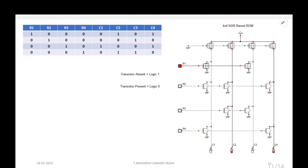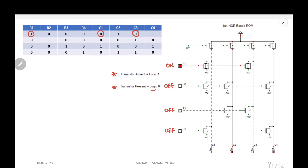For the 4x4 array, R1, R2, R3, R4 are the 4 rows, and C1, C2, C3, C4 are the 4 columns. Two key points: if a transistor is absent, it is logic 1; if a transistor is present, it is logic 0. For the first condition, R1 is 1 and the remaining three are 0. So R1 is ON, others are OFF. Since C1 and C3 are 0 in the truth table, logic 0 means a transistor should be present — so transistors are placed at the C1 and C3 cross points. At remaining cross points, no transistors are placed.